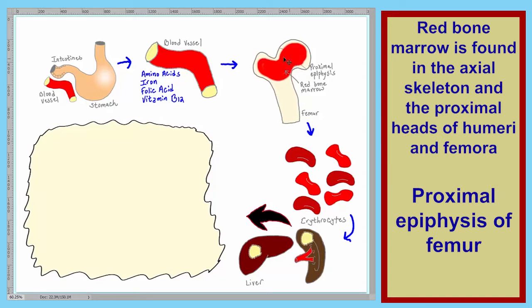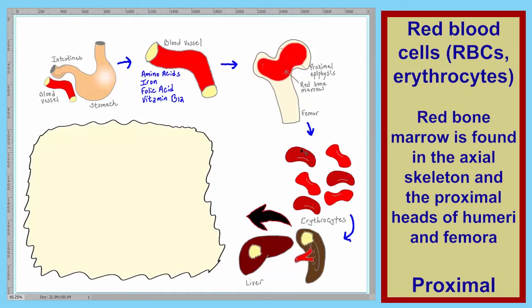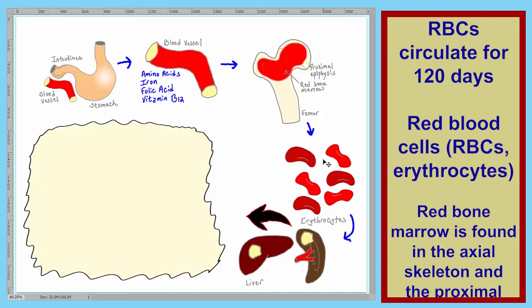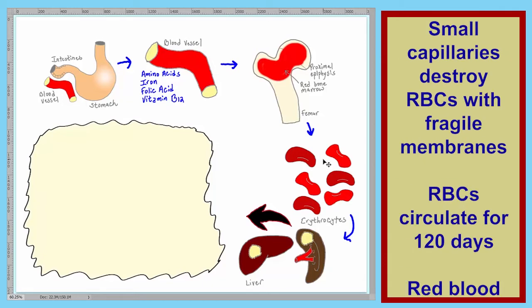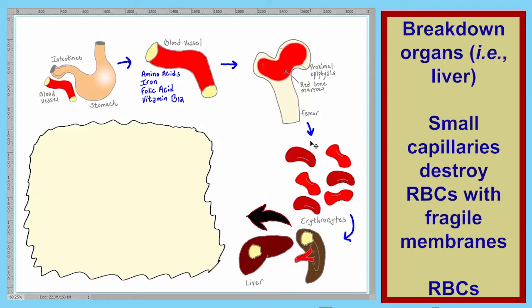We have the site of red blood cell production — our red bone marrow. The red blood cells stay in circulation for about 120 days. Traveling through the capillaries breaks down the cell membrane, so over time the red blood cell membrane will lose integrity. There are organs which sense that the red blood cell has reached the end of its usefulness.